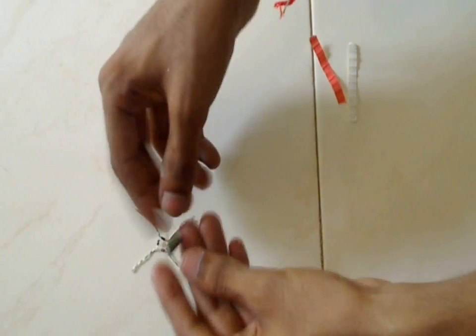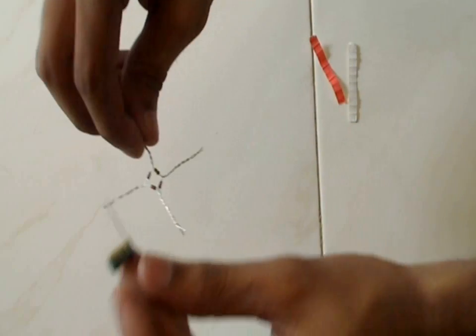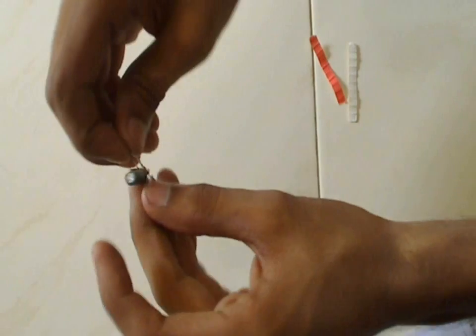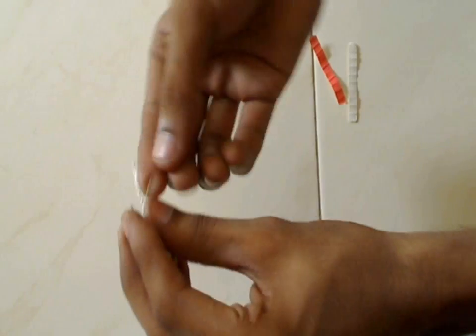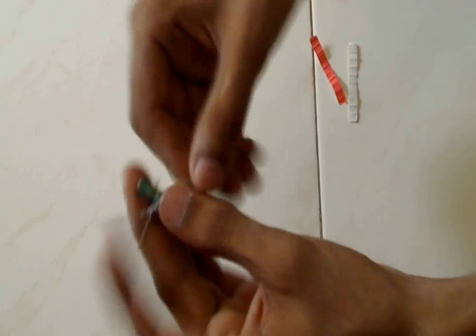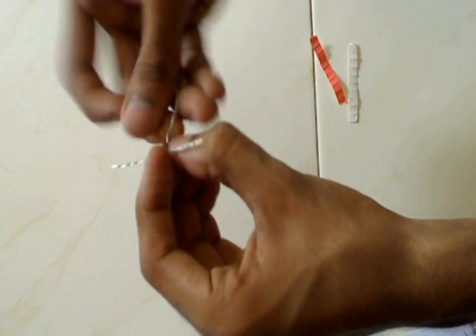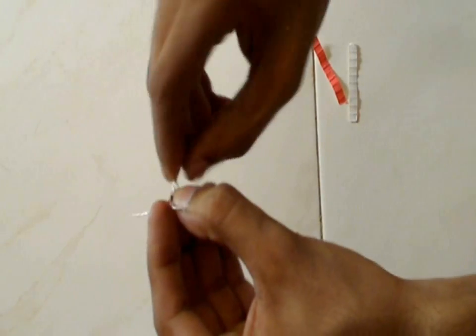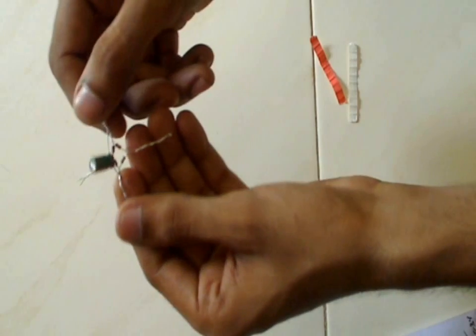Attach this capacitor to the rectifier to the positive and negative ends, keeping in note the polarity of the capacitor. So now the receiver is ready.